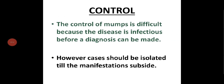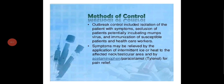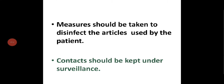Control of mumps is difficult because the disease is infectious before a diagnosis can be made. However, cases should be isolated until manifestations subside. Outbreak control includes isolation of symptomatic patients, exclusion of patients potentially incubating mumps virus, and immunization of susceptible patients and healthcare workers. Symptoms may be relieved by intermittent ice or heat to the affected neck or testicular area and by acetaminophen or paracetamol for pain relief. Articles used by the patient should be disinfected, and contacts kept under surveillance.